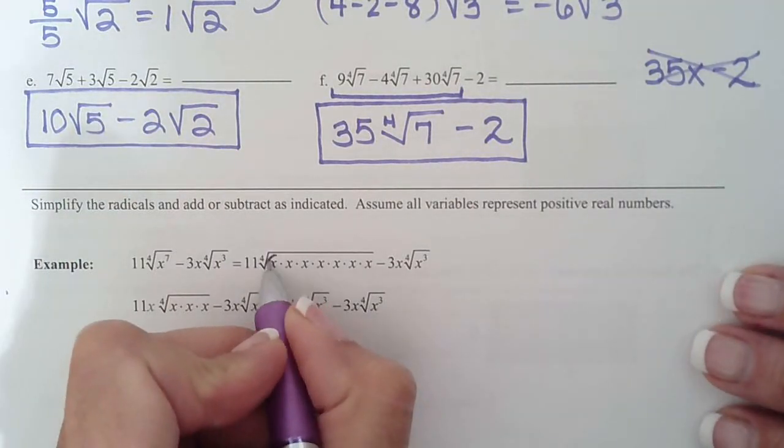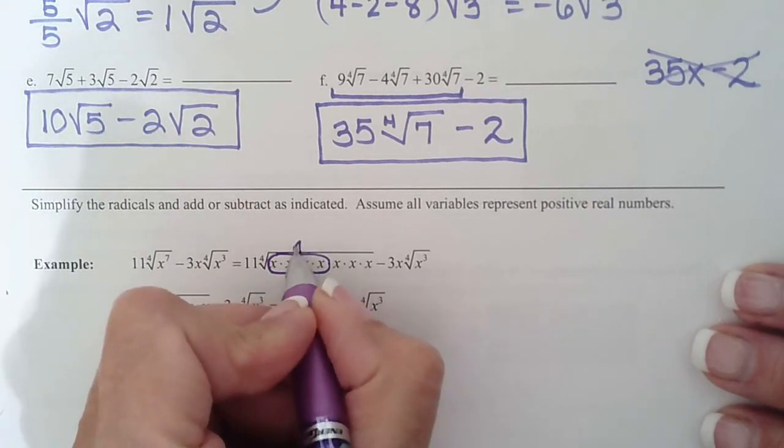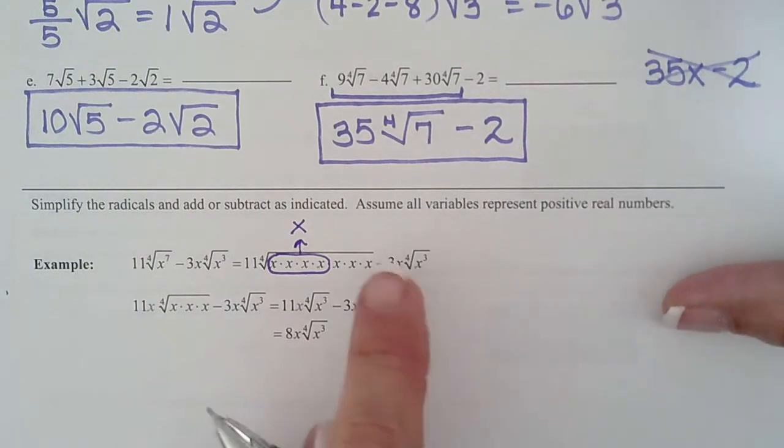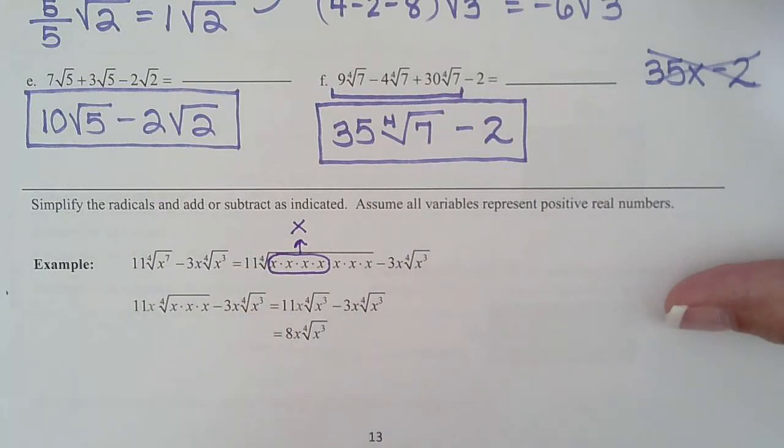So remember how we learned before break to circle groups of four. So one, two, three, four. And four x's come out as a single x, right? And then we have three underneath, but that's not enough to get out of jail. So those just are going to stay.